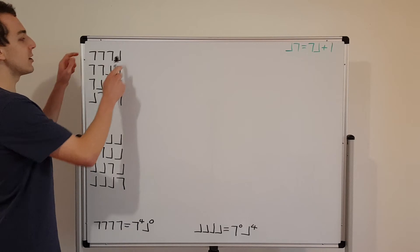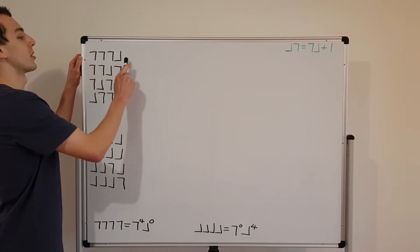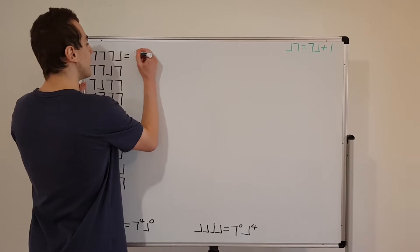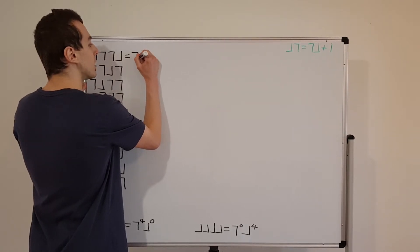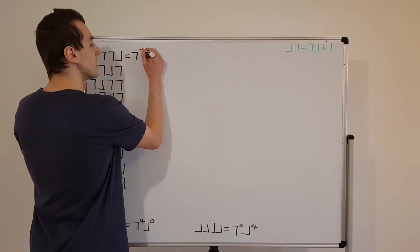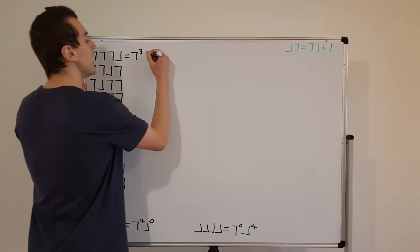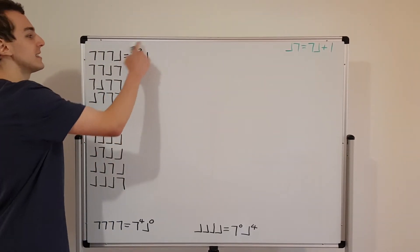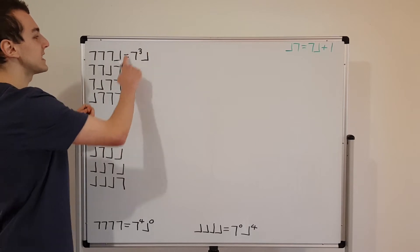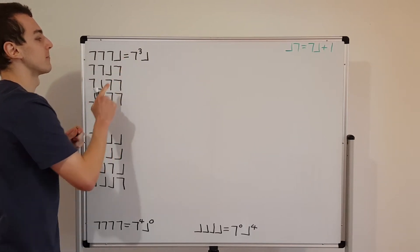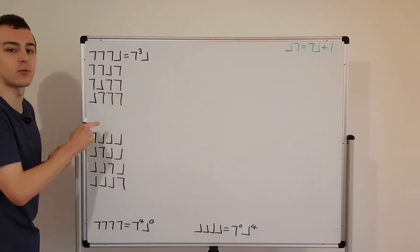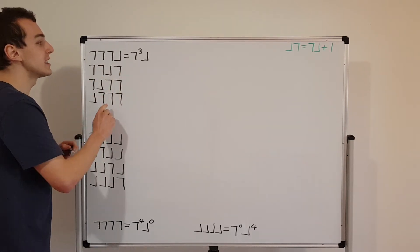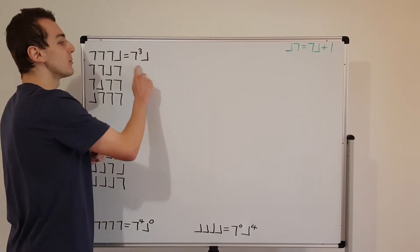Let's consider the top term first. We can write this more concisely as the raising operator cubed followed by the lowering operator. This is already in exactly the form we want, so no further manipulation is needed for this term.